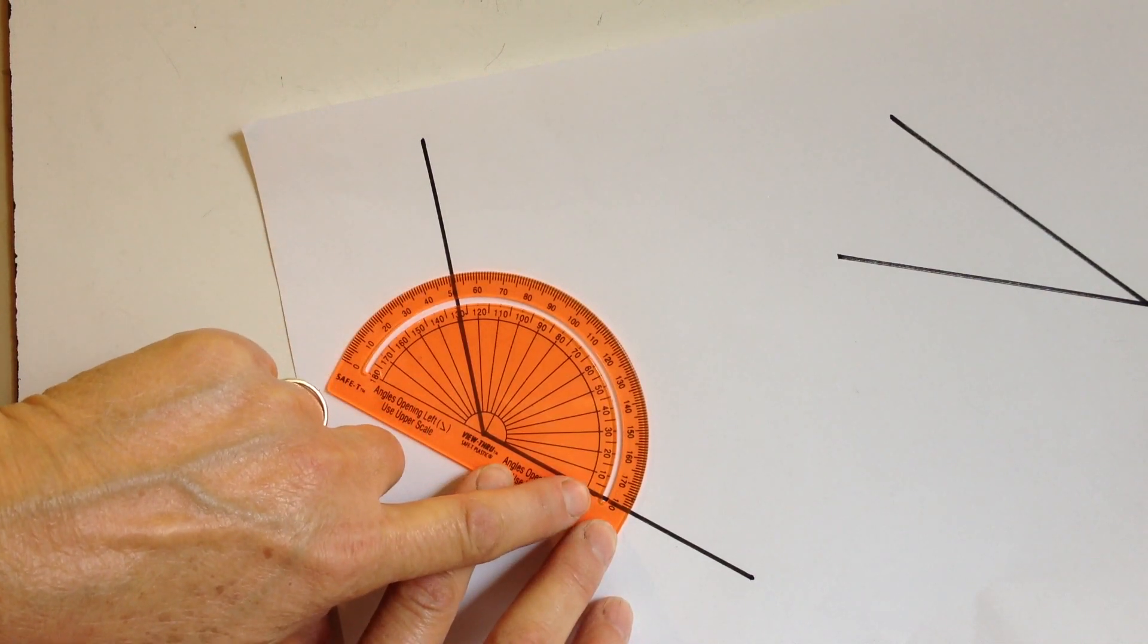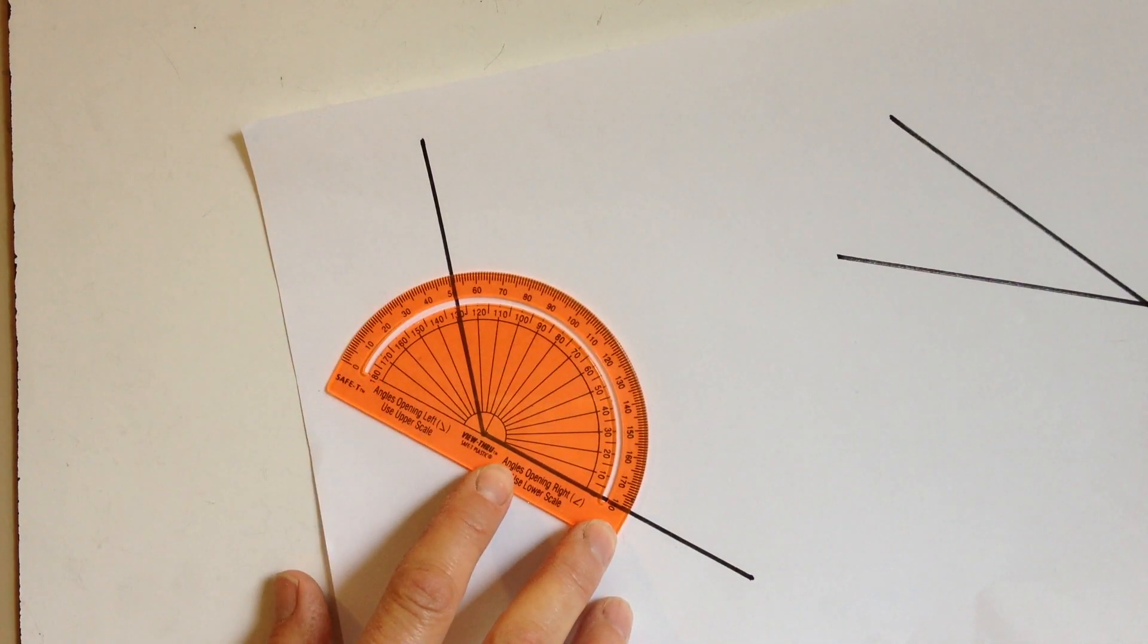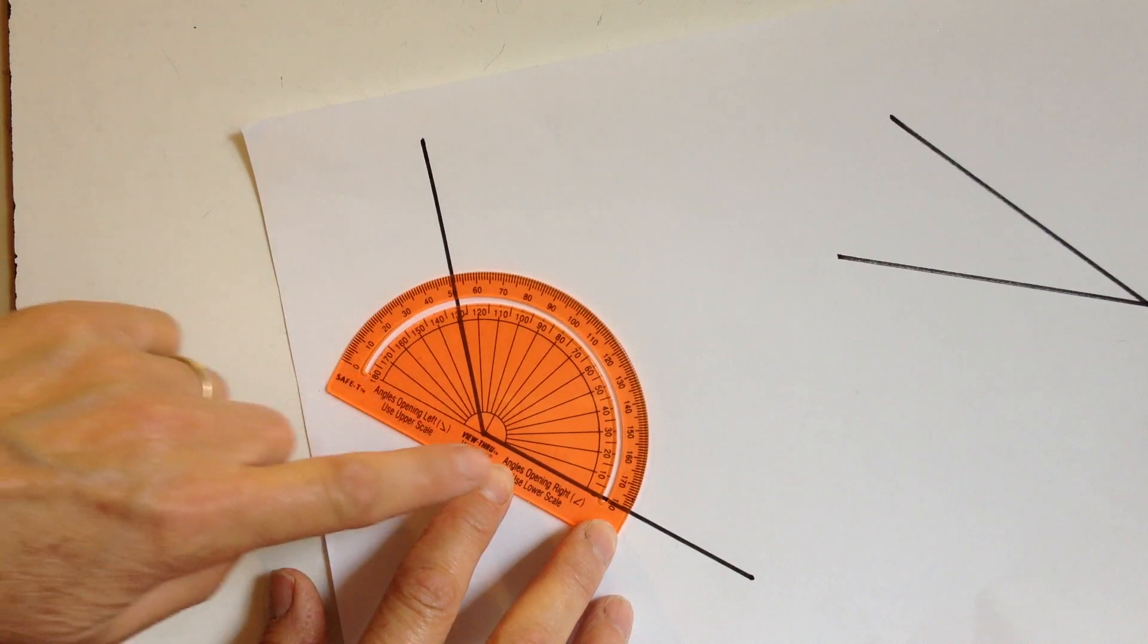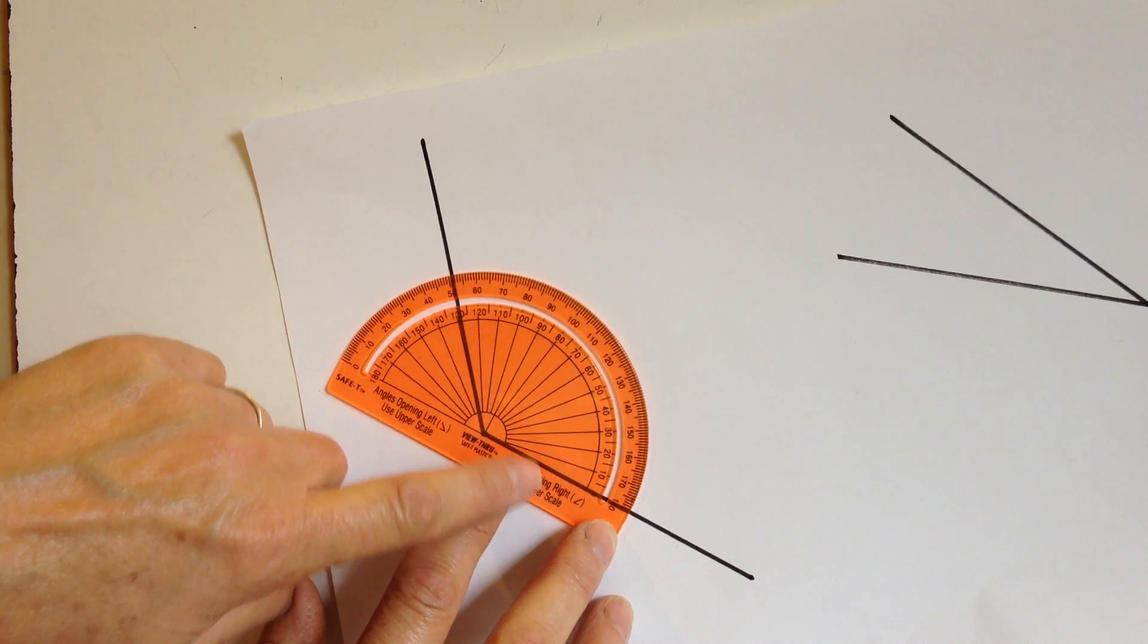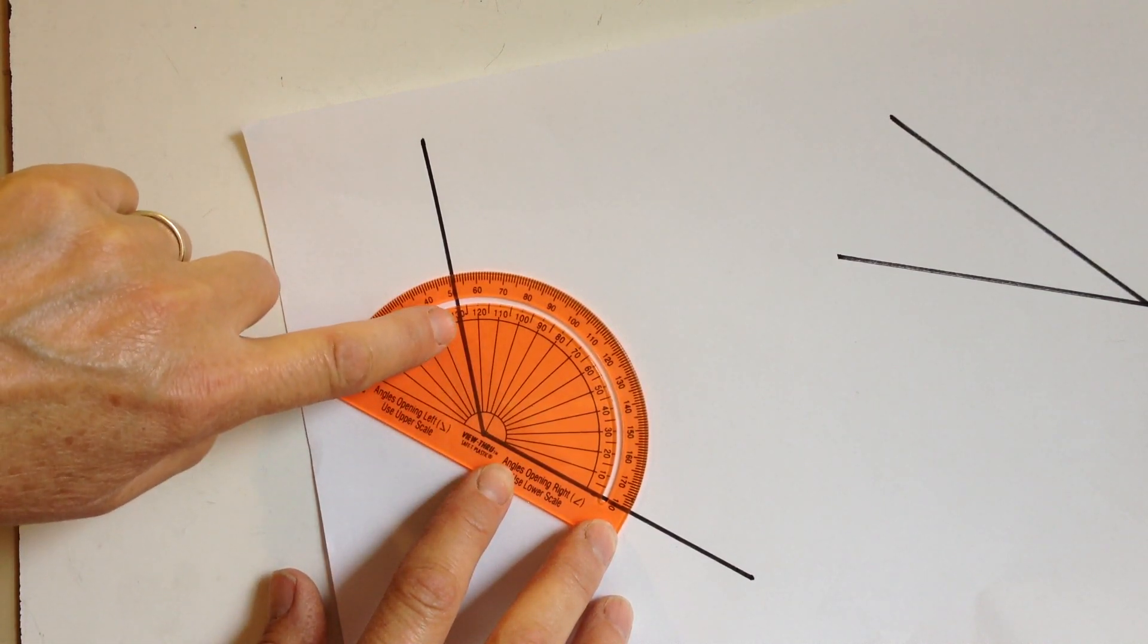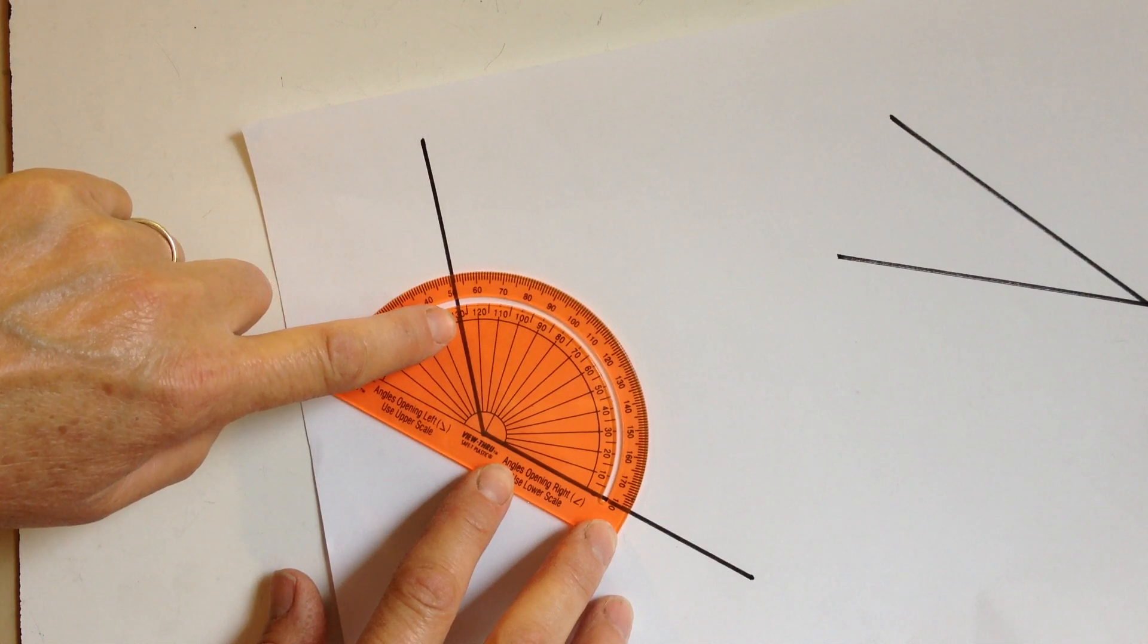Now zero is here, so we're going to use the inner scale. That angle looks like it's pretty close to, a little short of 130 degrees, maybe 128 degrees.